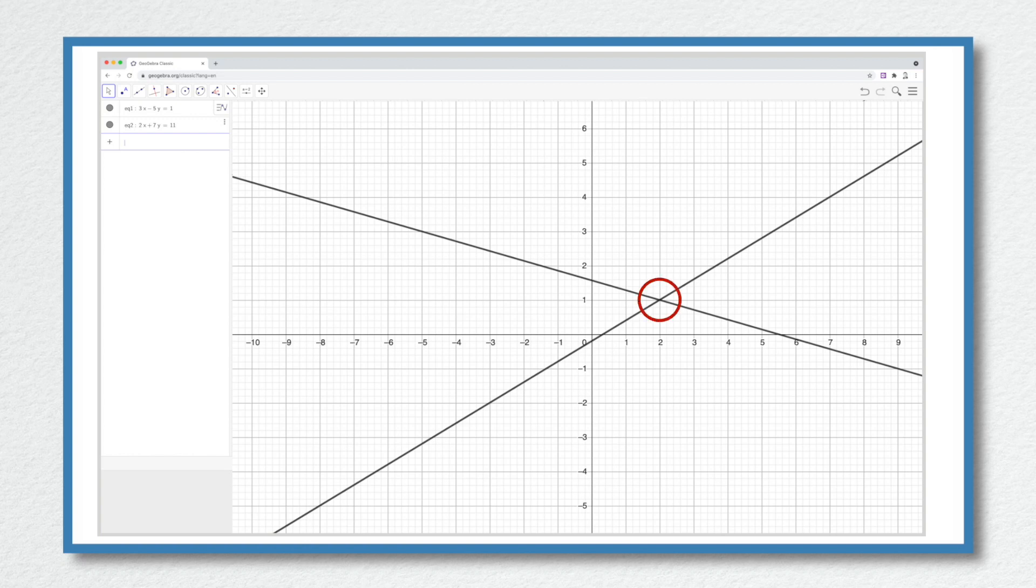Notice that the lines intersect. If I select this button at the top left hand of the screen and choose point, I can find the point where these two equations intersect. Hover the mouse over the intersection and click.